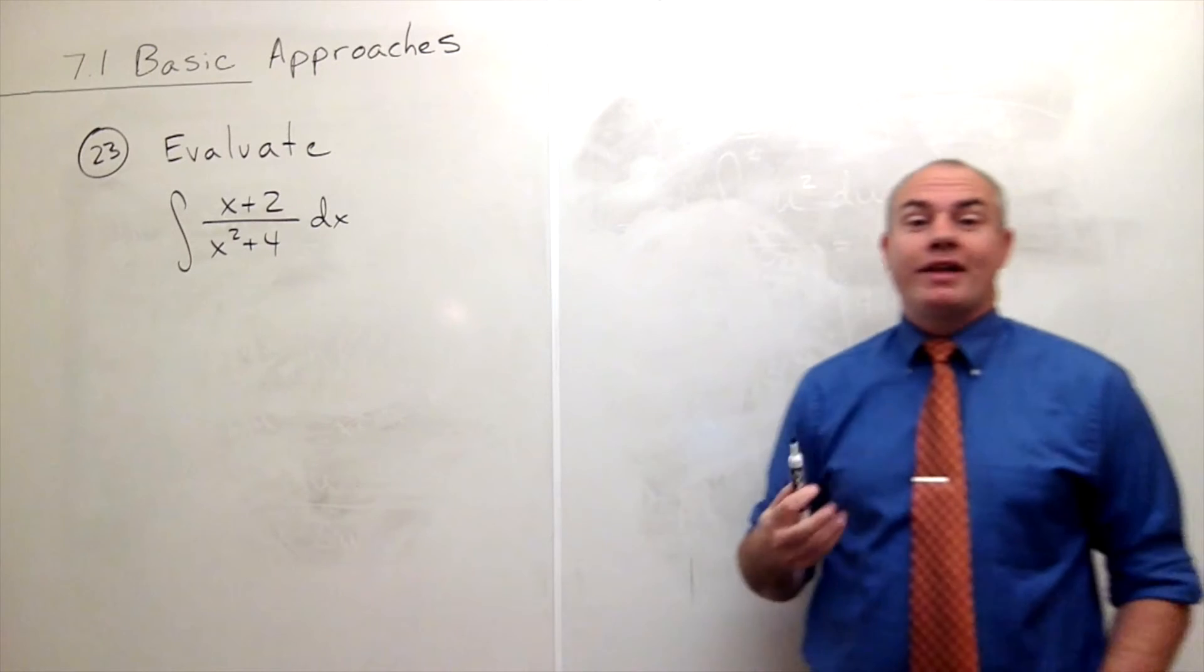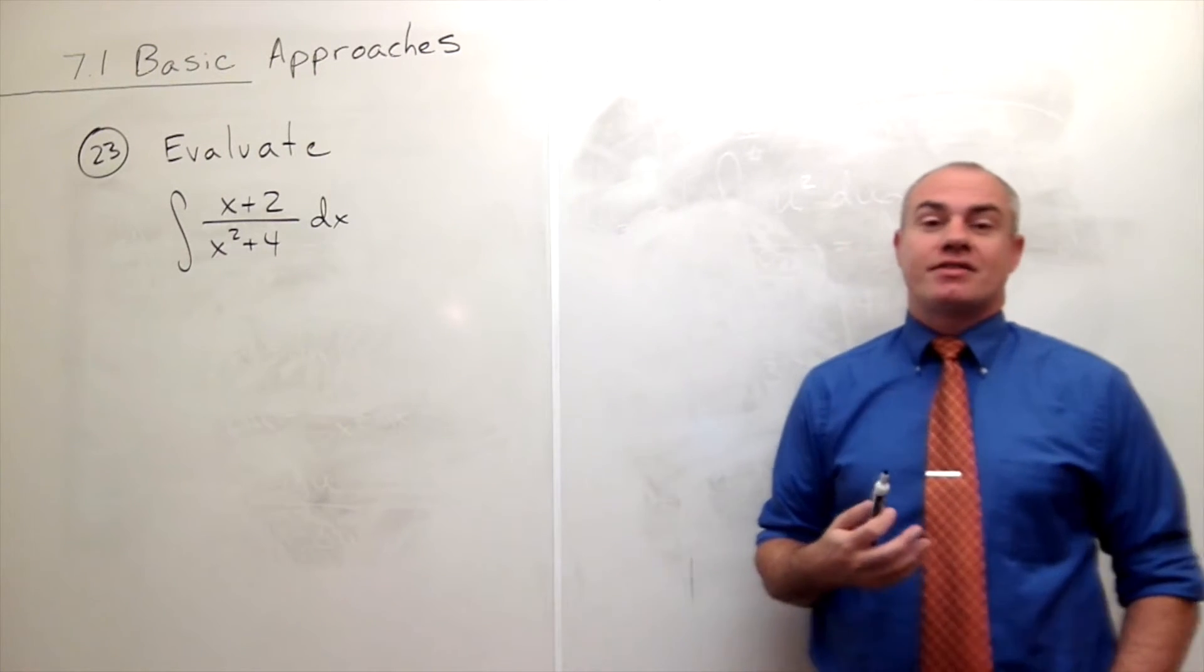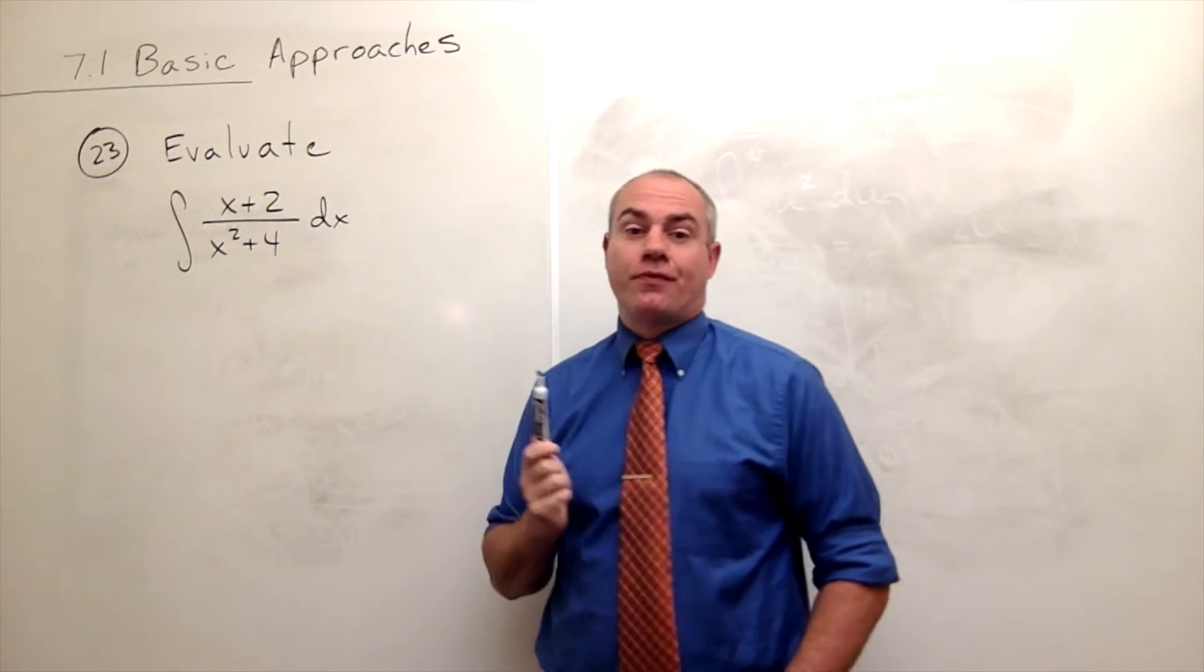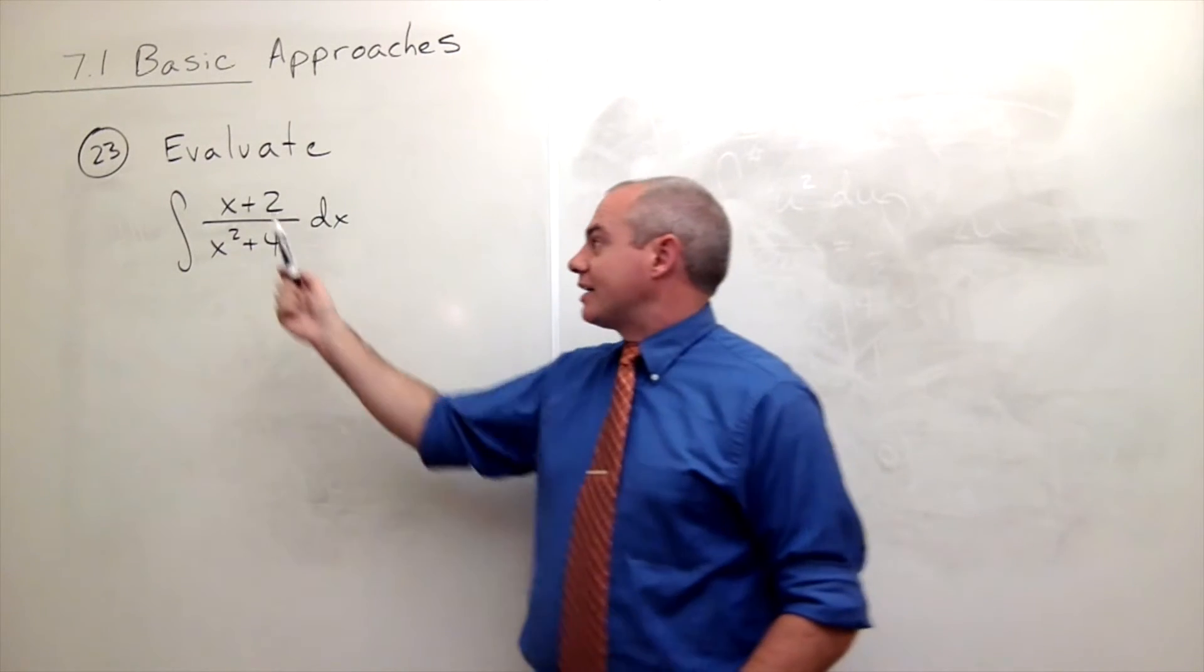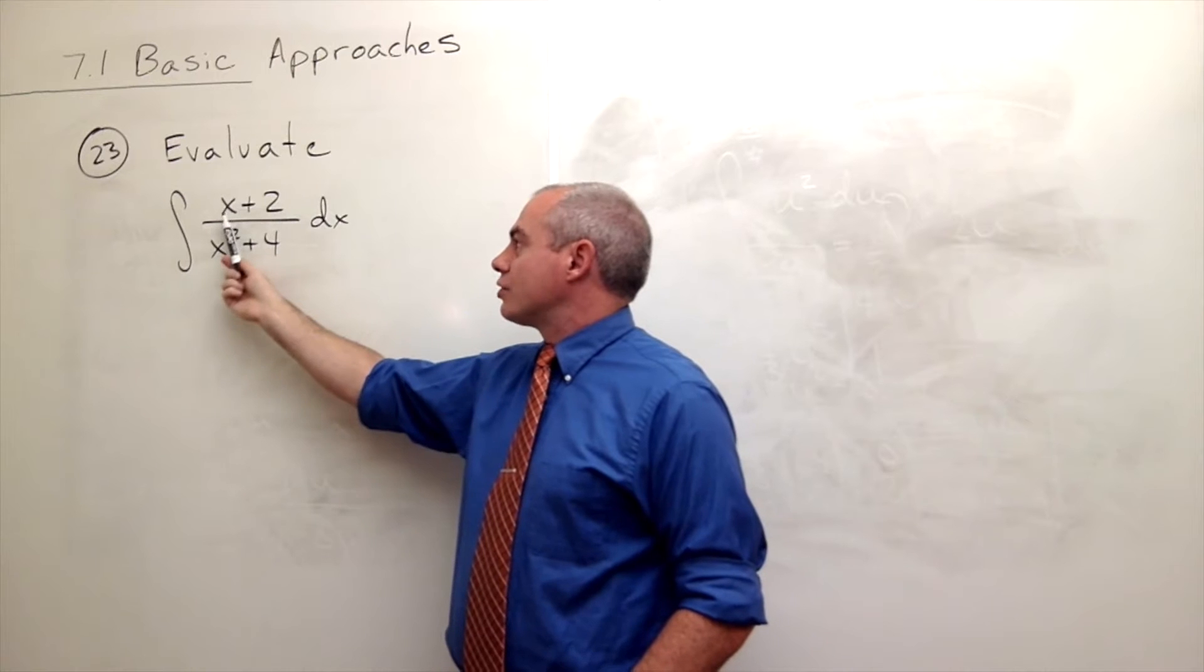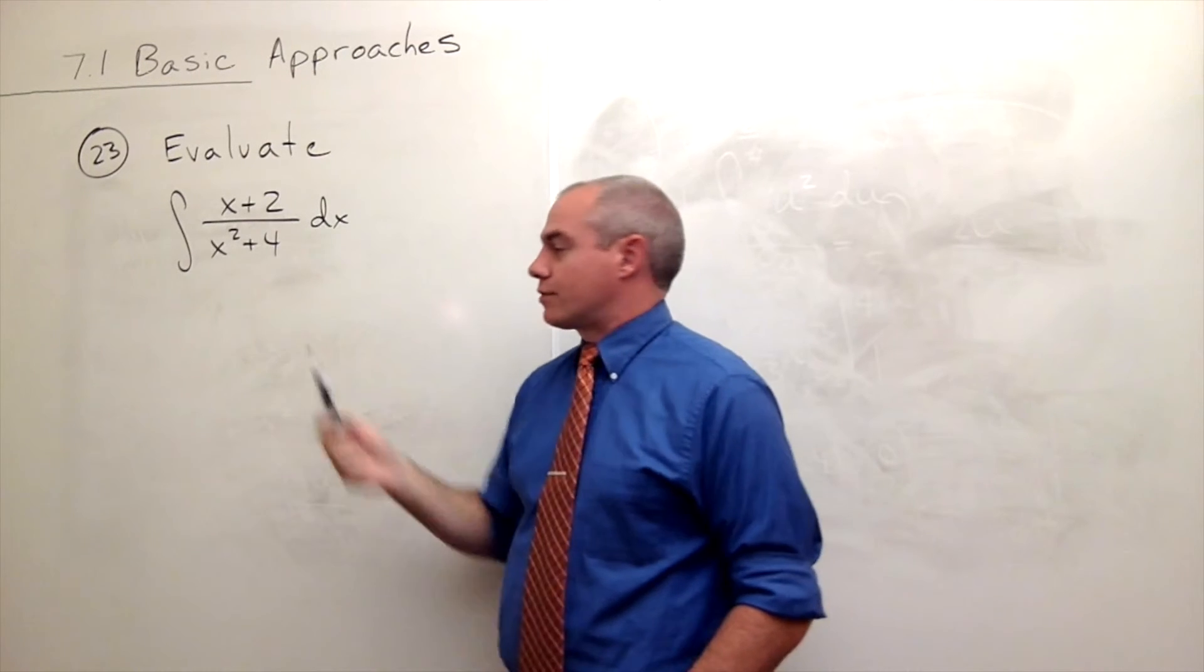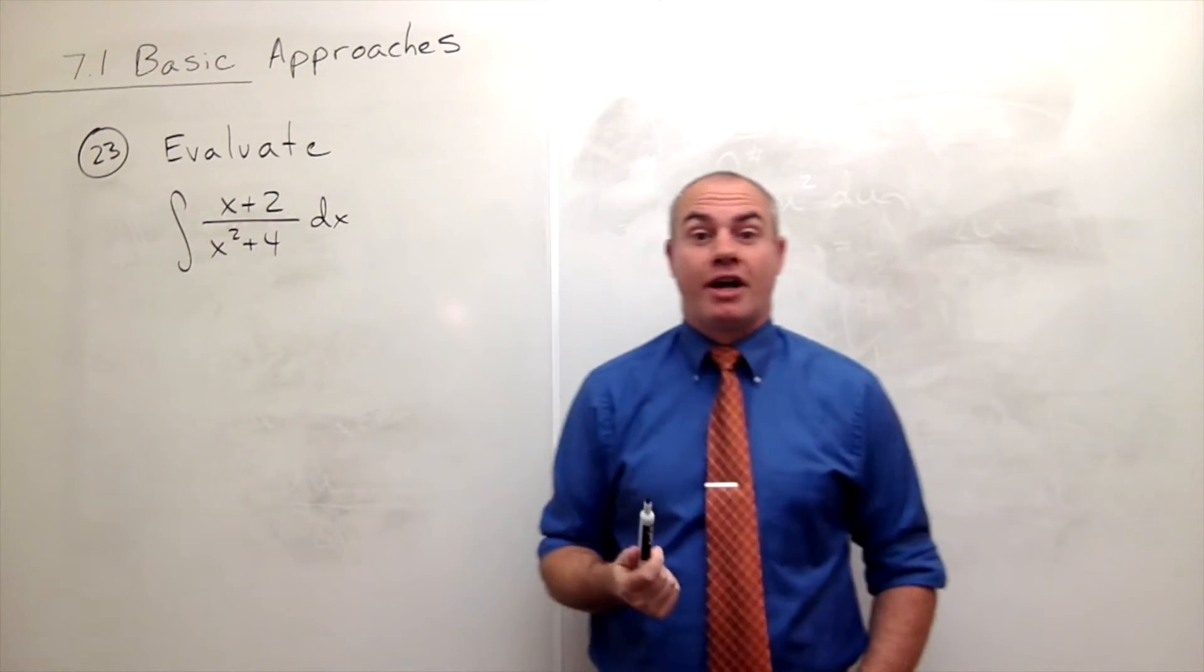Alright, the way that I'm going to tackle this integral is I'm going to split this integral into two fractions because I can split this up over the x plus 2, so I'll have x over x squared plus 4 and I'll have 2 over x squared plus 4, and that should help me.